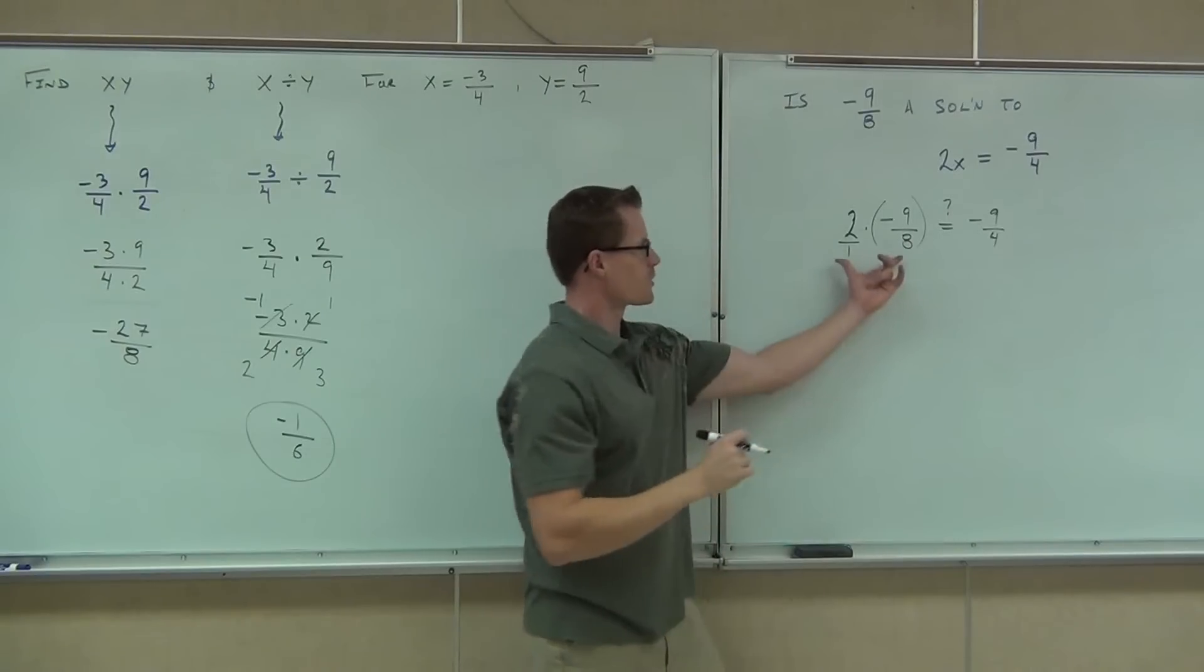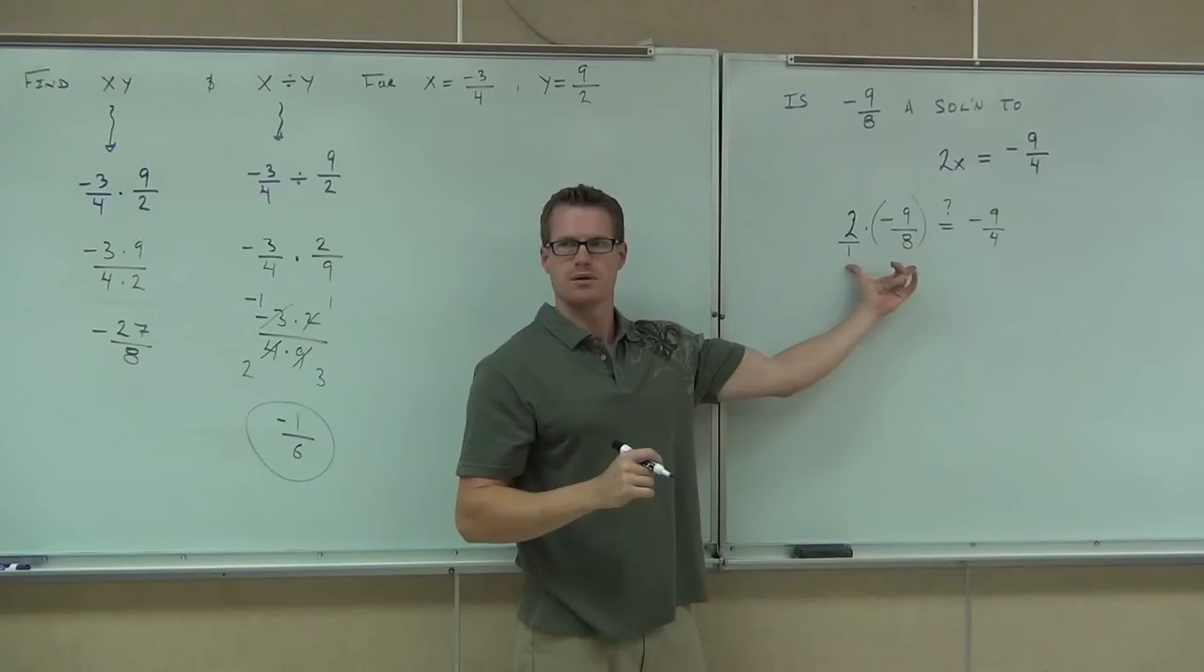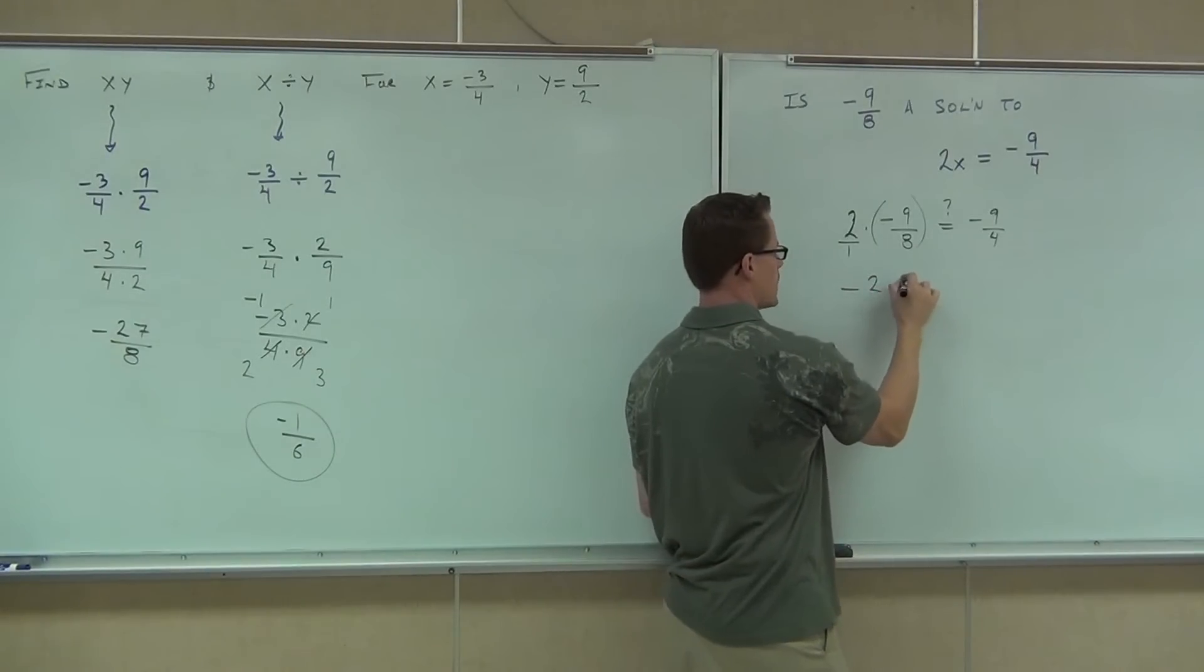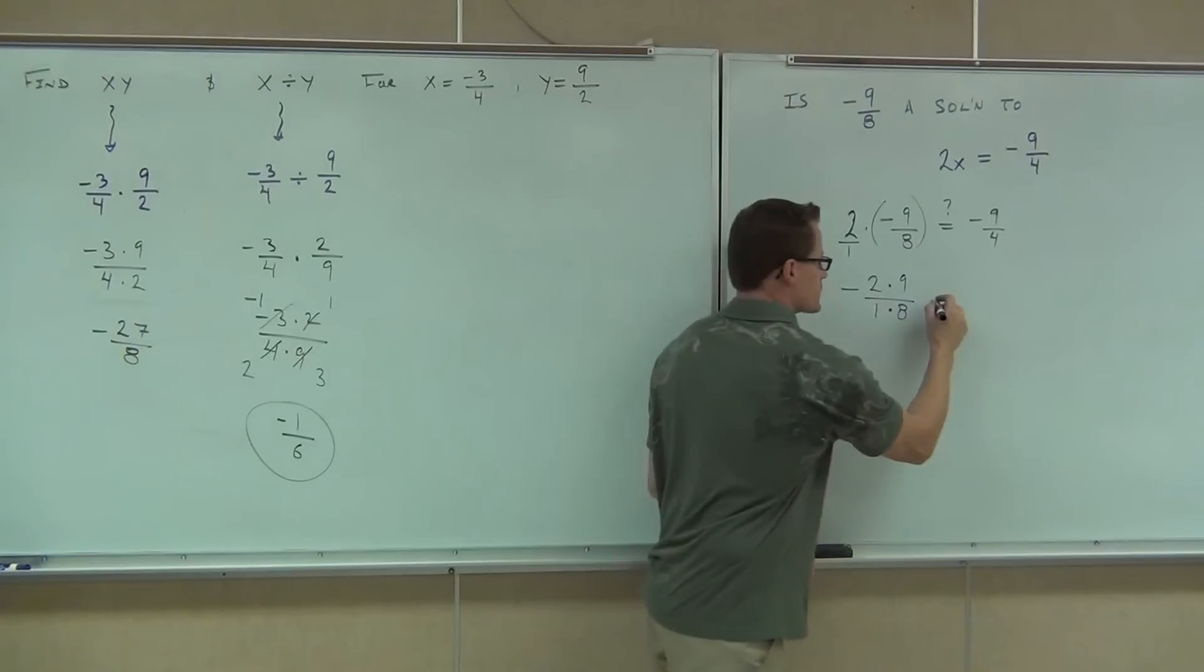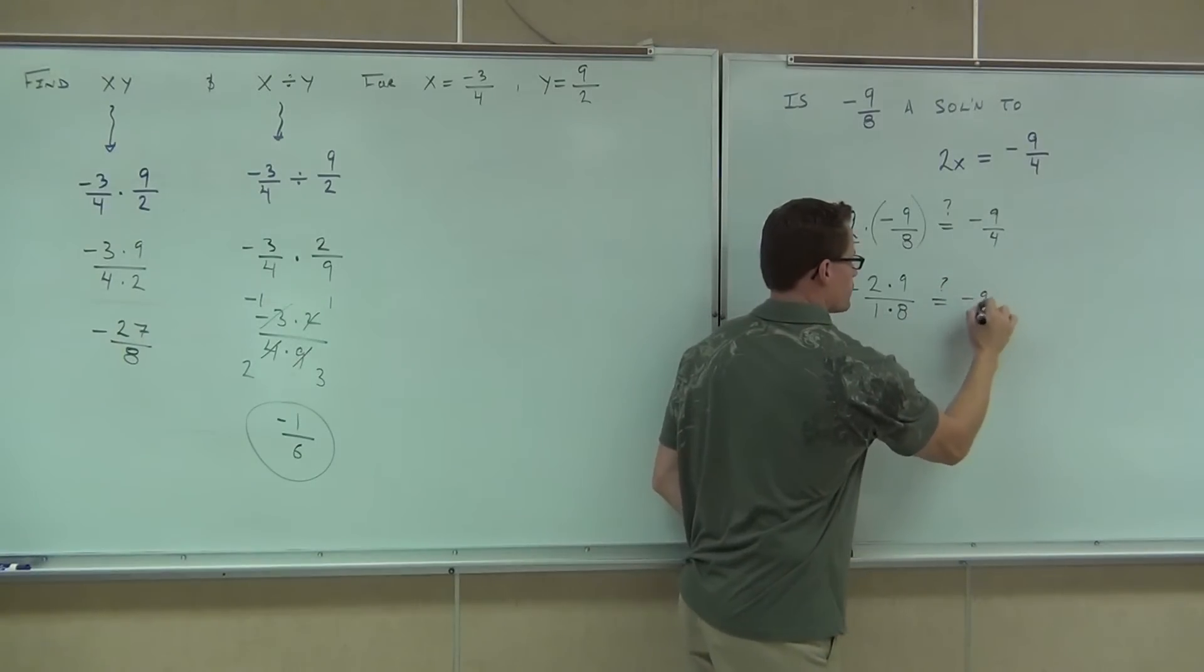Is our answer over here going to be positive or negative? Negative. Good. So I'll have negative 2 times 9 over 1 times 8. And we're asking, is that the same as negative 9 fourths?